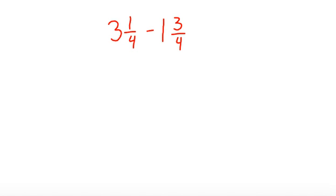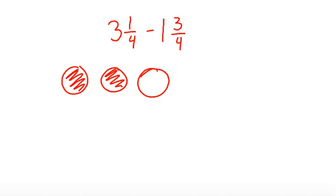So I'm going to start by drawing a model for 3 and 1/4. So I have 1, 2, 3, and then for my last one, I'm going to divide it into 4 parts. One of them is shaded, and that's my first part.